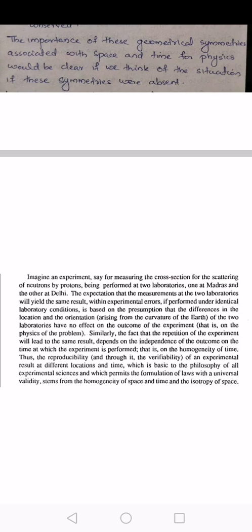Even if we repeat the experiment more than one time, the result will also be the same, which is independent of the time. Thus, the reproducibility of an experimental result at different locations or time, which is basic to the philosophy of all experimental sciences and which permits the formulation of laws with universal validity, stems from the homogeneity of space and time and the isotropy of space.